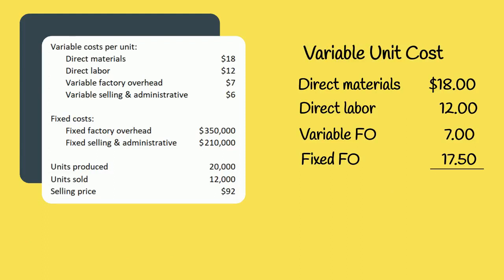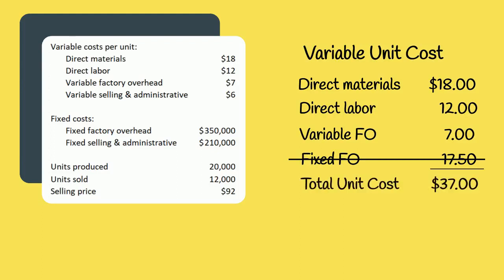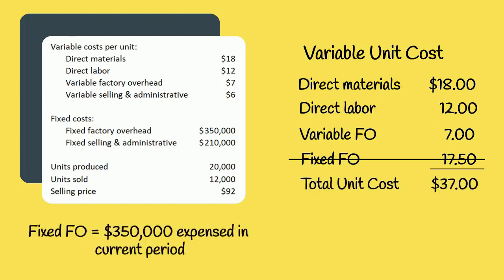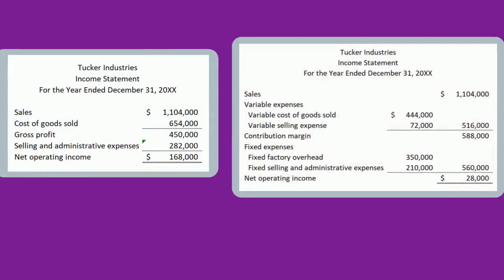How much would one unit cost if we used variable costing? Remember, the difference between the two costing methods is fixed factory overhead. With variable costing, fixed factory overhead is not included in product cost. The cost of one unit would include eighteen dollars of direct materials, twelve dollars of direct labor, and seven dollars of variable factory overhead, for a total unit product cost of thirty-seven dollars. The fixed factory overhead is treated as a period cost — all of it is expensed this period.